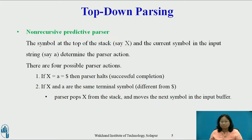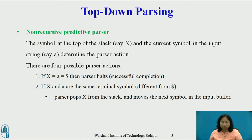There are four possible parser actions. First, if X equals $ and a equals $, then the parser halts and announces the successful completion of parsing. Second, if X and a are the same terminal symbol different from $, that is X equals a and a ≠ $, then the parser pops X from the stack and advances the input pointer to the next input symbol.